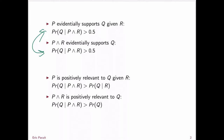However, if we're talking about positive relevance, then there really is a difference. P is positively relevant to Q given R means the probability of Q given P and R is greater than the probability of Q given R. Whereas if we say P and R is positively relevant to Q, we mean the probability of Q given P and R is greater than the probability of Q. So 'P evidentially supports Q given R' and 'P and R evidentially supports Q' are two ways of saying the same thing, but that's not the case when we talk about positive relevance.